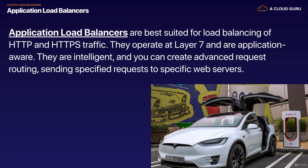Application load balancers are best suited for load balancing of HTTP and HTTPS traffic. They operate at Layer 7 and are application aware. For example, if you change your language to French on a website, your load balancer can actually see what you've done and then load balance across all the French web servers. Or if you change your language to English or maybe to US dollars, it can see that and load balance across the US servers. That's what we mean by application aware — it can see inside the application and all the requests you're making, even individual HTML, so it can make intelligent decisions.